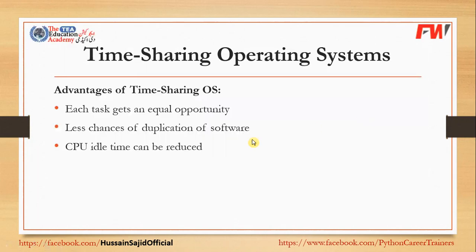If we talk about advantages, we have an equal opportunity for each task — meaning an equal interval of time for everyone to run. Every task has a different execution time, but everyone gets a little time. Just like a queue, everyone is in the queue. The task sits in the queue, and it goes in a circle. If the execution time is complete, then the task is completely done and removed. Otherwise, the task goes back to the queue. Each task gets an equal interval of time.